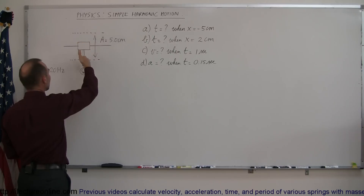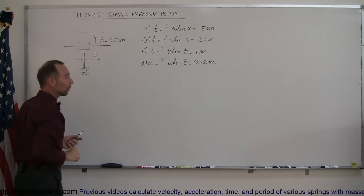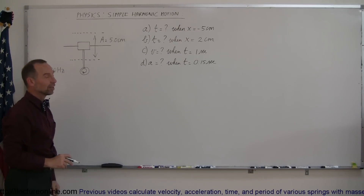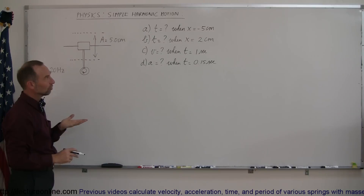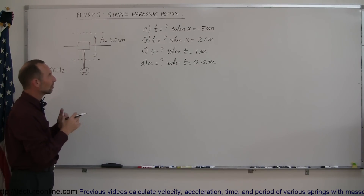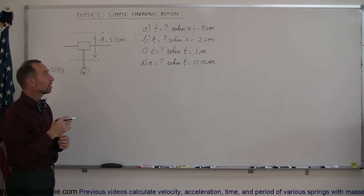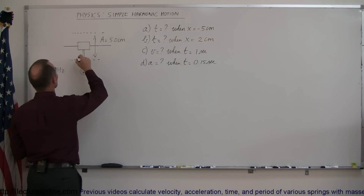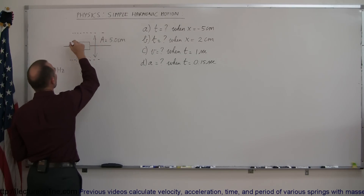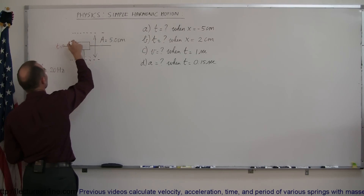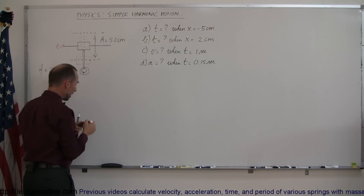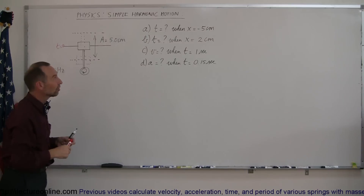Let's say this is a machine part that goes up and down at a frequency of 20 Hz, and its maximum displacement from equilibrium is 5 cm. The first question is: what is the time it takes to go from its initial position to x equals minus 5 cm? Minus 5 cm is when the part reaches that lowest position. Assuming it starts at equilibrium at t equals 0, it would first move up and then move back down — so that is about three-quarters through its initial cycle.